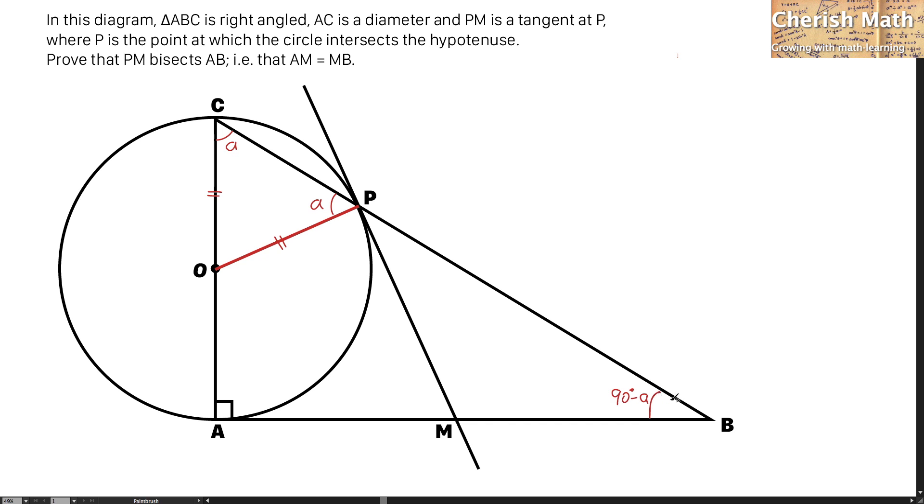I got it simply by using the supplementary angles. The line MP is tangent to the circle at the point P, so I can confirm that at this part it is forming a right angle with the circle.